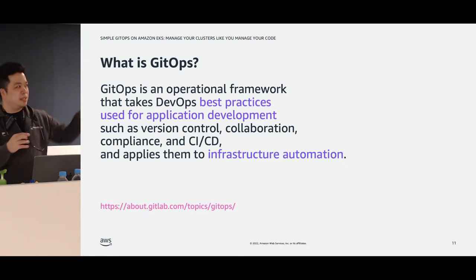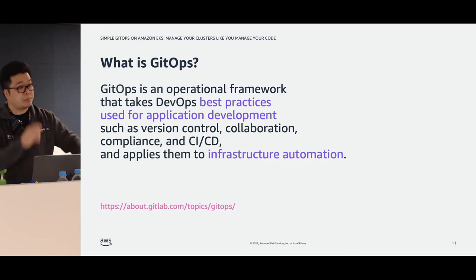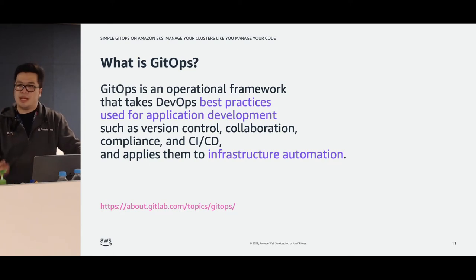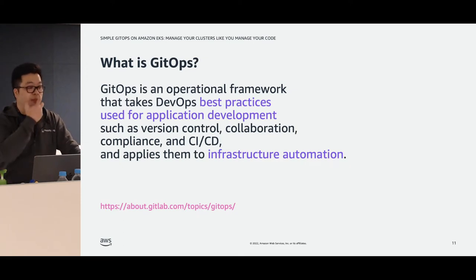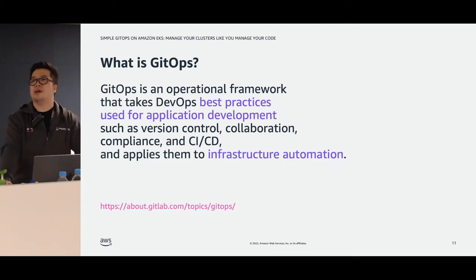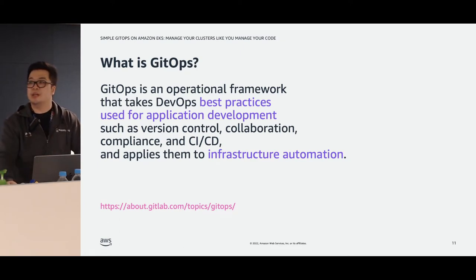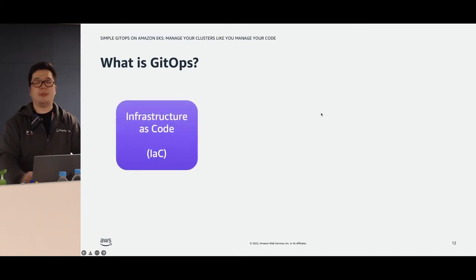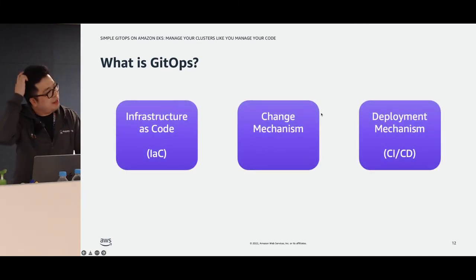That's really what GitOps is. I like this definition from GitLab's documentation: they call GitOps an operational framework — a subset of DevOps that applies best practices for application development onto infrastructure deployment and automation. Pretty much the same things you're probably already familiar with, applied to your infrastructure — particularly in Kubernetes — in an automated fashion. Same expectations: code reviews, automated deployments, pull requests, and so on.